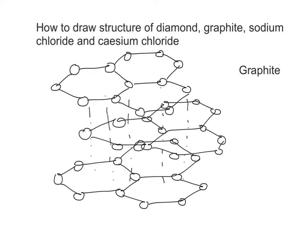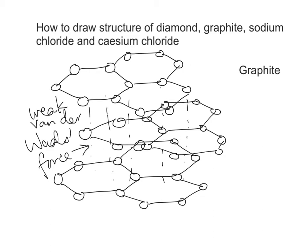We can also show the weak intermolecular force holding layers together by drawing dark lines between the layers. We can count the number of carbon atoms appearing in each layer: 1, 2, 3, 4, 5, 6, 7, 8, 9, 10, 11, 12, 13. Lastly, include a key in your drawing.